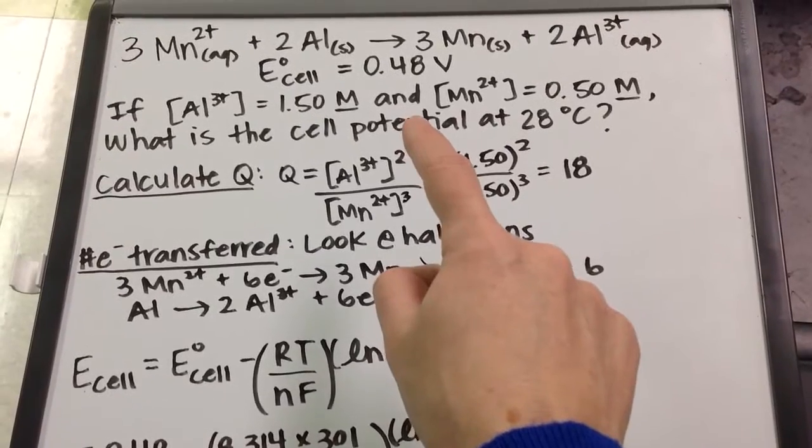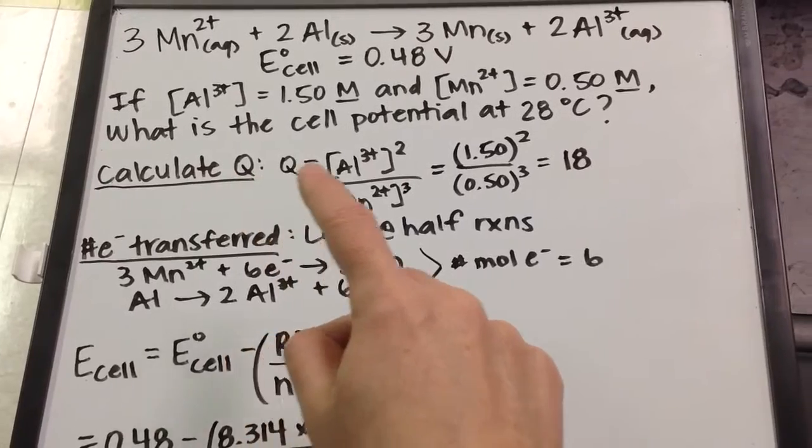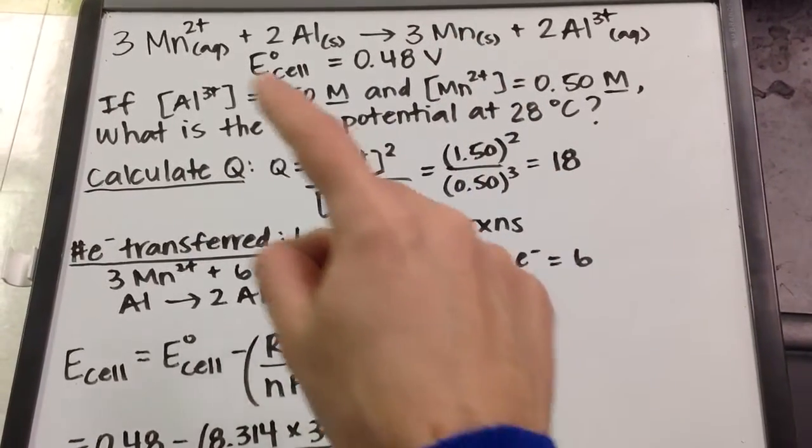what is the new cell potential? The first thing we have to do is calculate the reaction quotient. That's products over reactants.